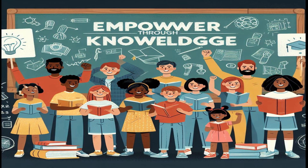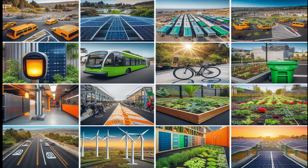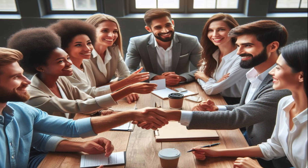Education and awareness: increasing awareness and understanding of PROUT's principles and benefits through education, advocacy, and public discourse can lay the foundation for acceptance and implementation. Pilot projects and demonstrations: implementing small-scale pilot projects or demonstrations of PROUT's principles in local communities can showcase its feasibility and effectiveness, building momentum for broader adoption. Collaboration and networking: building networks and collaborations among like-minded individuals, organizations, and communities globally can create a supportive ecosystem for the adoption of alternative socioeconomic models.